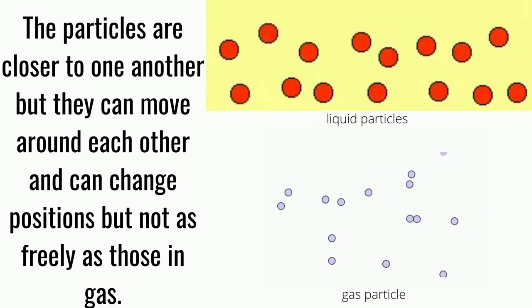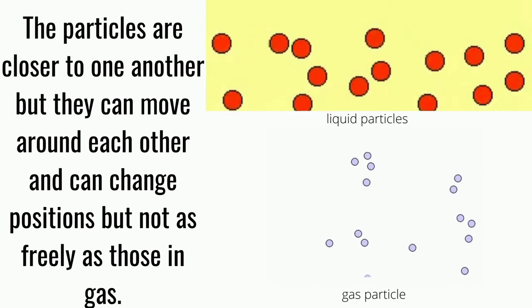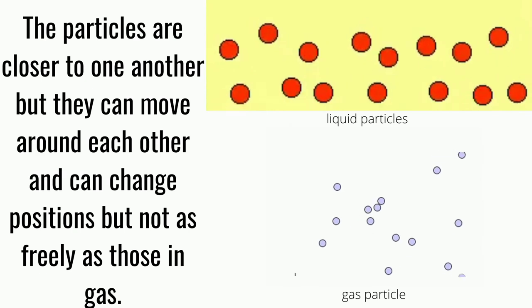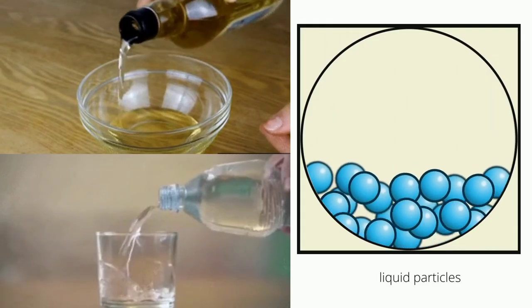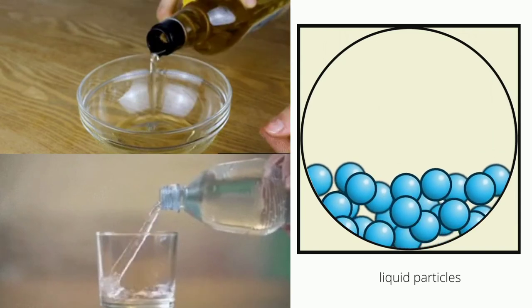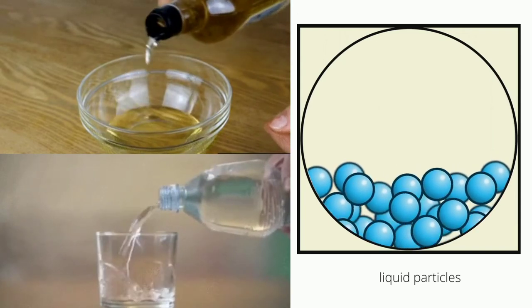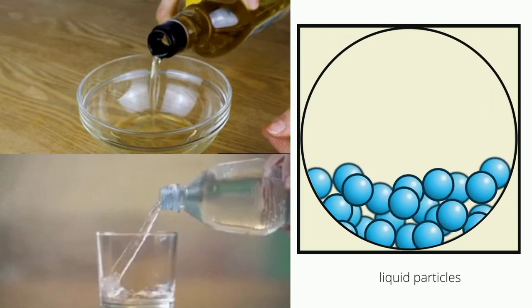In liquids, the particles are closer to one another but they can move around each other and can change positions, but not as freely as those in gas. As you observe from the given example of liquid, like cooking oil, it flows. Its particles spread out and take the shape of the container while maintaining its volume.